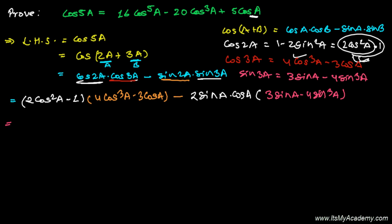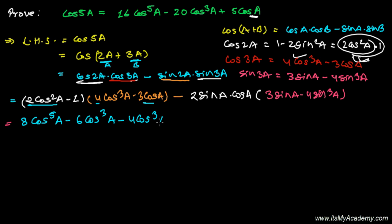So let's elaborate further. 2cos²a will multiply 4cos³a, giving 8cos⁵a. Then 2cos²a multiplies −3cos a, giving −6cos³a. Then −1 multiplies 4cos³a giving −4cos³a, and −1 times −3cos a gives +3 cos a. So that part gives us 8cos⁵a − 6cos³a − 4cos³a + 3cos a. Now let's deal with the sine part.